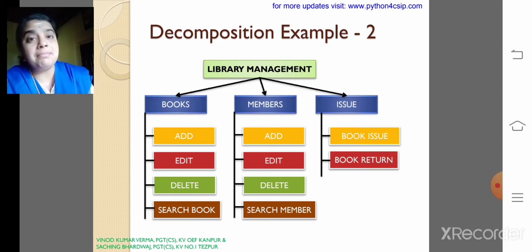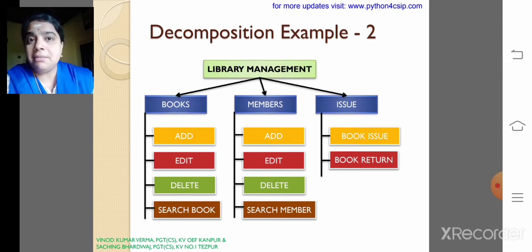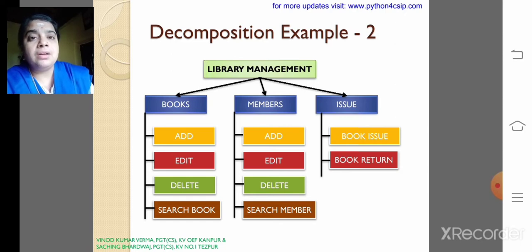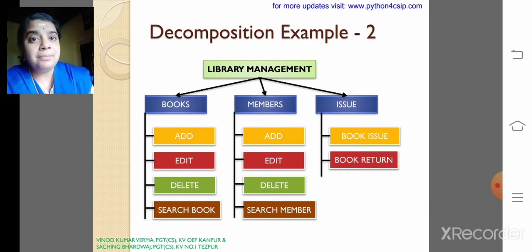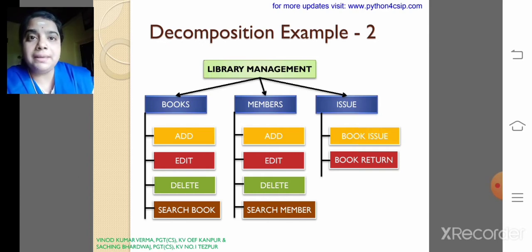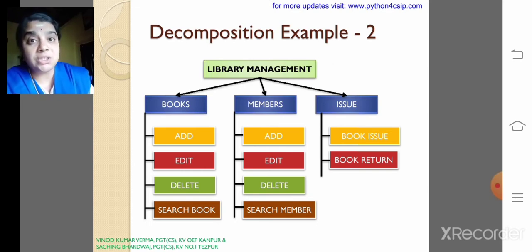Similarly for members — consider our school class, so each member is nothing but you people having memberships in the library. Your name, your class, which books you took, which date — all that has to be added. Sometimes updates may happen, then deletion — if a student is getting a TC and leaving, we need to delete that student's record. Then search a member: if you want to know which student took which book, it is very easy to search.